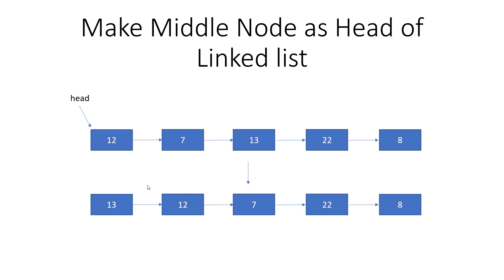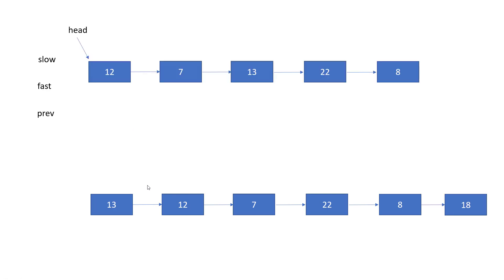Now how can we solve this? Basically, our aim is to first find the middle node — in this linked list the middle node is 13. Once we have found the middle node, we will point the next of the middle node to the head node. So this will be our solution.